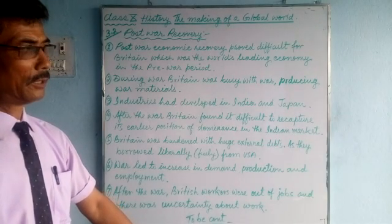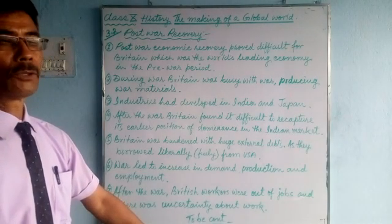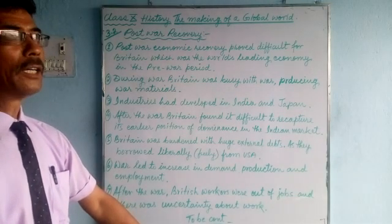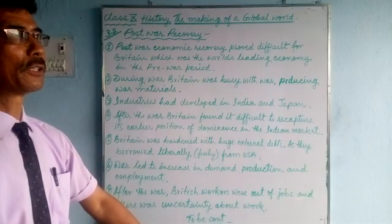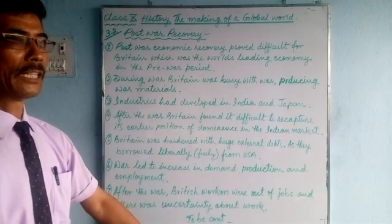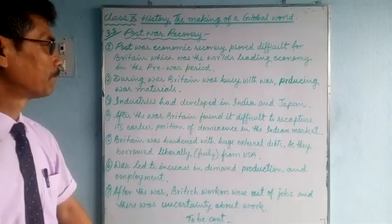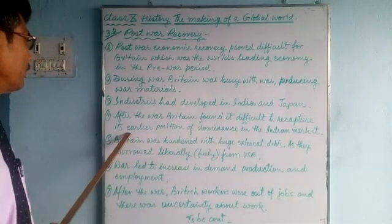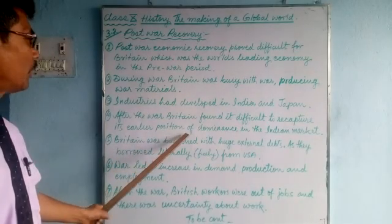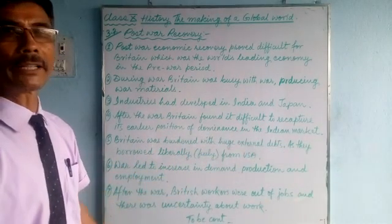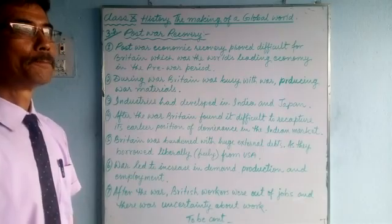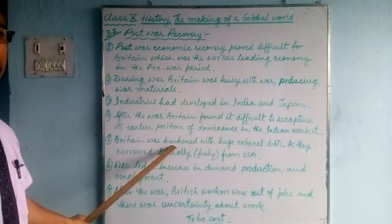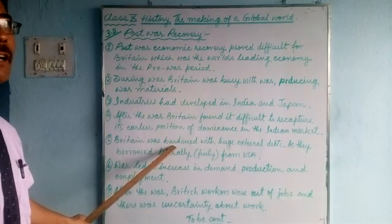After the war, Indian industrialists started producing cotton clothes for the open market. They had originally prepared those goods for the colonial army, but now they redirected production for civilian markets. Britain found it very difficult to recapture its earlier position of dominance in the Indian market.